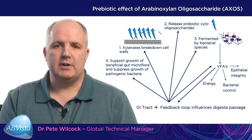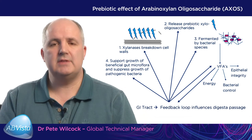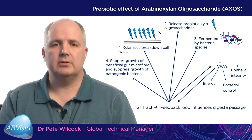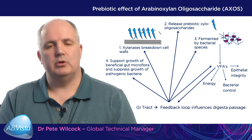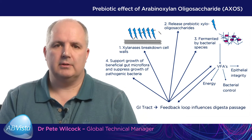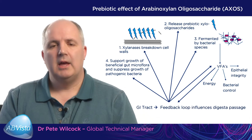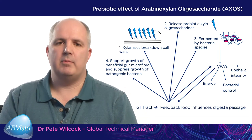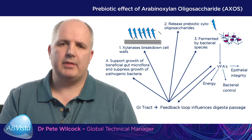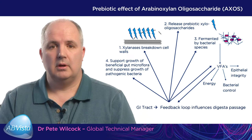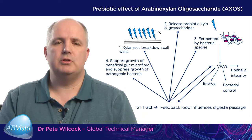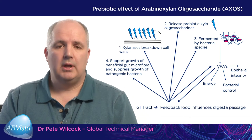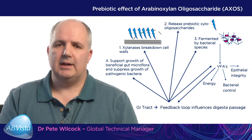Fermentation can produce an increase in volatile fatty acids, which can be used as an energy source, for bacterial control, or for the production of butyrate improving epithelial integrity. This change in microflora can also reduce pathogenic bacteria within the hindgut. Finally, VFA production has a feedback loop which reduces digestive flow within the animal, meaning greater retention within the stomach and increased overall diet digestibility.